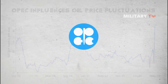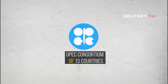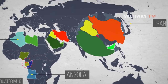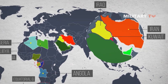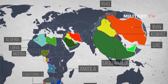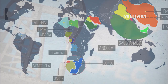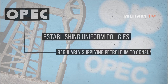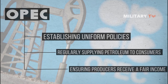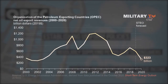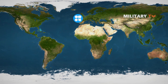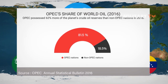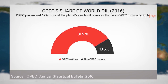OPEC is a consortium that, as of 2021, is made up of 13 countries: Algeria, Angola, Congo, Equatorial Guinea, Gabon, Iran, Iraq, Kuwait, Libya, Nigeria, Saudi Arabia, the United Arab Emirates, and Venezuela. OPEC's commission is to provide stability within the oil market by establishing uniform policies, regularly supplying petroleum to consumers, and ensuring producers receive a fair income. In short, OPEC helps bring order to the oil market. OPEC was formed by five oil-producing countries in the 1960s, and according to 2016 estimates, 81.5% of the world's crude oil reserves are located in OPEC countries.